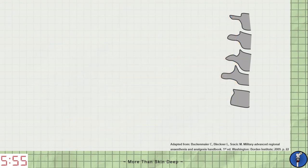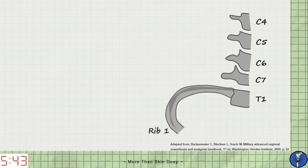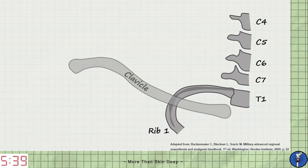First let's take a look at the bony relations of the brachial plexus. To start with we have the vertebral bodies of C4 to C7 in the cervical spine and T1 in the thoracic spine. Coming from T1 we have the first rib and sitting roughly over the top of this we have the clavicle also known as the collarbone.